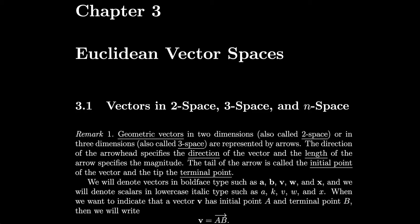The tail of the arrow is called the initial point of the vector, and the tip is the terminal point. We will denote vectors in boldface type, such as a, b, v, w, and x, and we will denote scalars in lowercase italic type, such as a, k, v, w, and x.